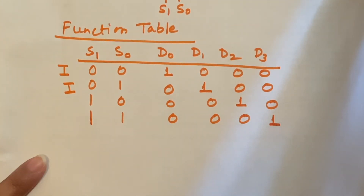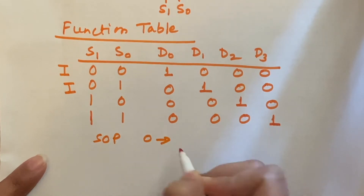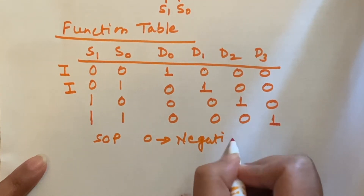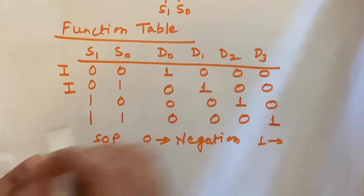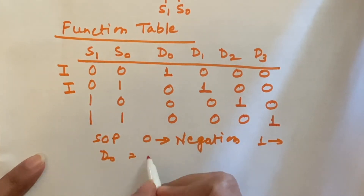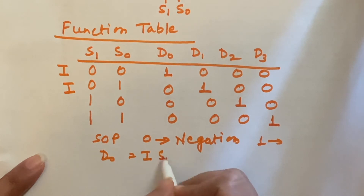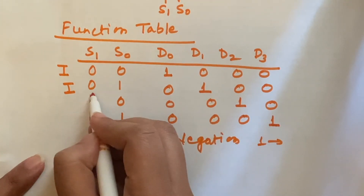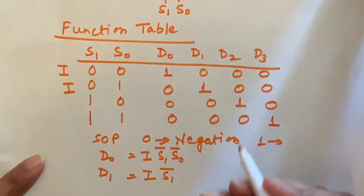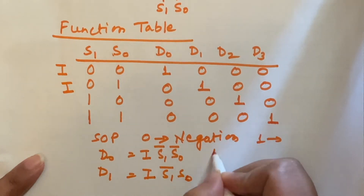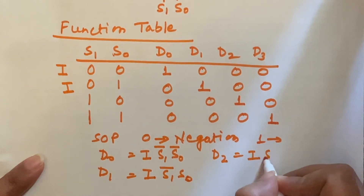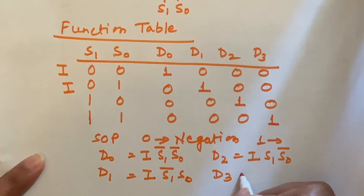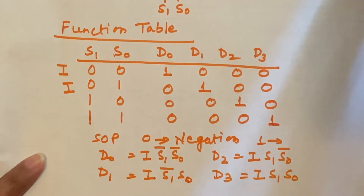Now we find the minterm expressions in SOP form for D0, D1, D2, and D3. In SOP form, 0 is the negated term and 1 is the original term. For D0: I·S1̄·S0̄. For D1: I·S1̄·S0. For D2: I·S1·S0̄. For D3: I·S1·S0. We have now derived the minterm expressions for all four output lines.